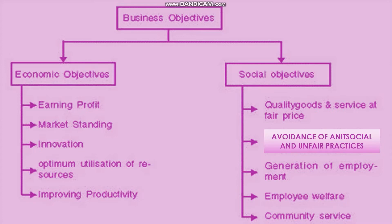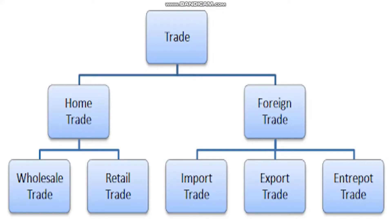So these are the two objectives of a business: economic objectives and social objectives. Now let's move on to trade. In the previous lesson we learnt about trade. Trade means buying and selling of goods. Trade is a part of business, mainly concerned with buying and selling of goods to consumers.